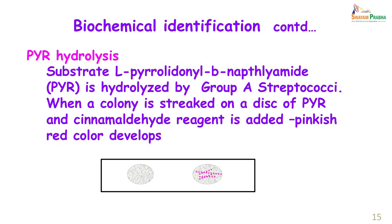The next test was PYR hydrolysis. This is a substrate hydrolyzed by group A streptococci. When a colony is rubbed on a filter paper disc containing the substrate, a pink colour appears. Aisha's sample gave a pink colour, confirming the presence of group A Streptococcus pyogenes.